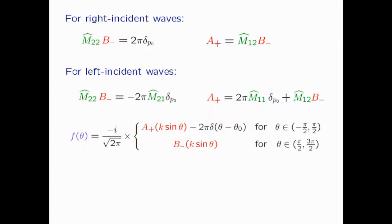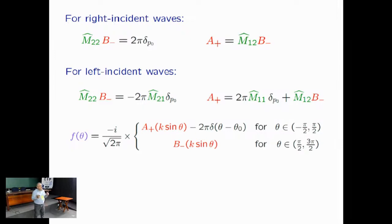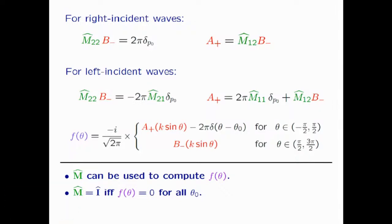In summary, if you can determine the transfer matrix and solve these two integral equations, you have the full solution of the scattering problem. The transfer matrix carries complete information. If it is the identity operator — M₁₁ = 1, M₂₂ = 1, M₁₂ = 0 — then the scattering amplitude is zero: the potential is invisible. This gives a very nice criterion for omnidirectional invisibility — the potential does not scatter waves sent from any direction.